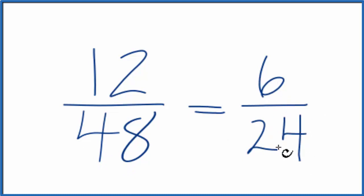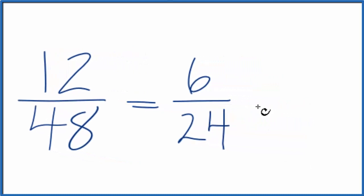6 goes into 24 four times. So we could divide the top by 6, which gives us 1. Divide the bottom, the denominator, by 6, which gives us 4. 4 times 6 is 24. Again, we get 1/4,